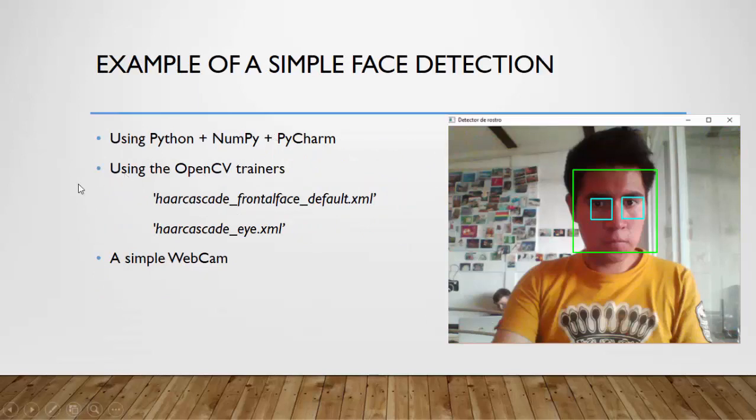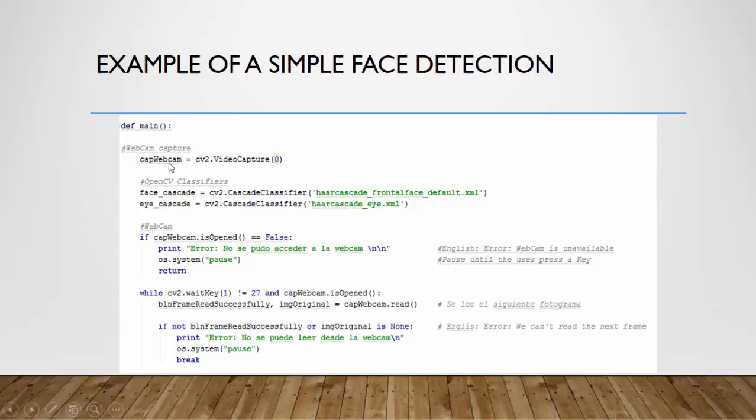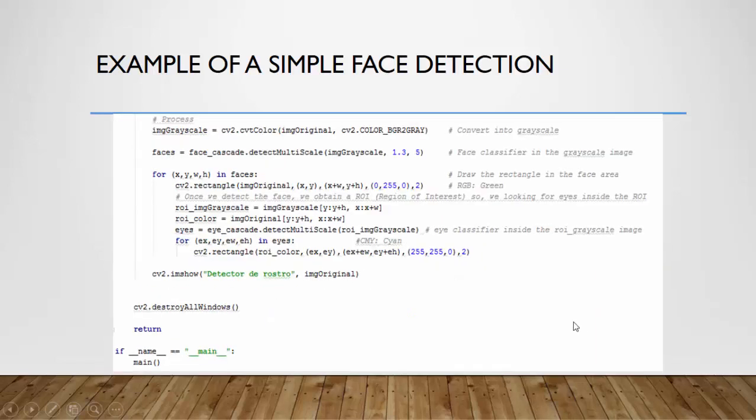Finally, we will show you an example, a simple face detection using Python plus the software NumPy plus the IDE PyCharm. And we will use the OpenCV trainers, for example, the Cascade HaarCascade FrontalFace and HaarCascade Eye, and a simple webcam. So this is the result of that. We have to code the main function. When we obtain the video from the webcam, we declare, we define the OpenCV classifiers and start the webcam. So if we find an error, we can stop the program. And for example, when we can't read the next frame, the program will break. So this is instructions from the start of the webcam.